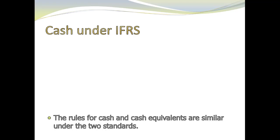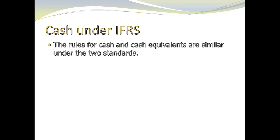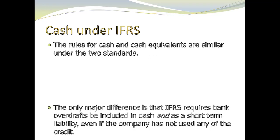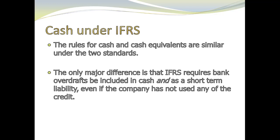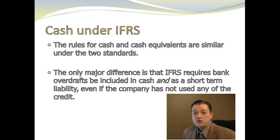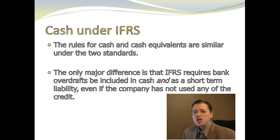Under IFRS, the rules are pretty much the same. The only major difference is that IFRS requires that we take our bank overdraft and include it in cash. Most of us have overdraft protection on a checking account — we don't want checks to bounce, especially when we're paying suppliers. So we have an agreement with our bank for overdraft protection, essentially a short-term loan or small line of credit, so that if we write a check and it bounces, the bank will still cover it.